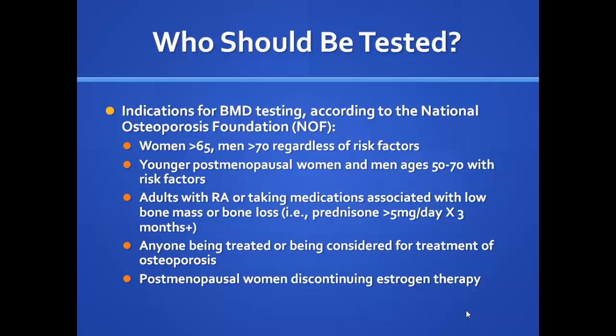If you have normal bone density, you don't need a repeat test for 10 years. With osteopenia, the timing of your next scan depends on other scoring factors. With osteoporosis, we repeat it every two years.